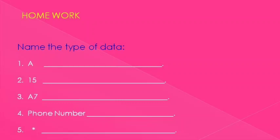Here I give one homework. At the end of our session I will give one homework for you. Now name the type of data. Write the type of data for these data. The first one is A. The second one is 15. The third one is A7.